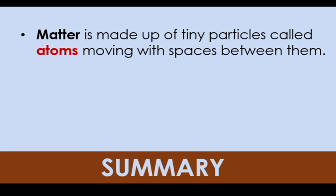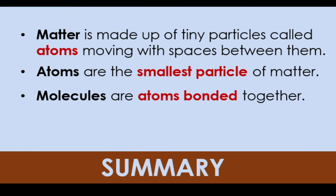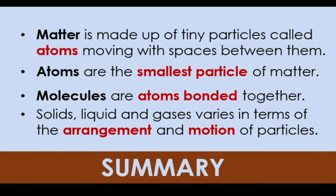Now, let's wrap things up. Matter is made up of tiny particles called atoms moving with spaces between them. Atoms are the smallest particle of matter, and molecules are atoms bonded together. Solids, liquids, and gases varies in terms of the arrangement and motion of particles. Here is a table summarizing the characteristics of solids, liquids, and gases.